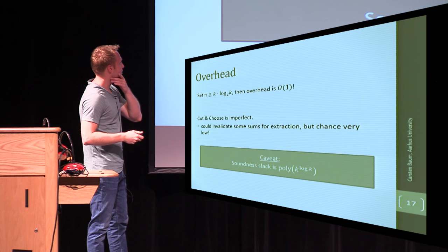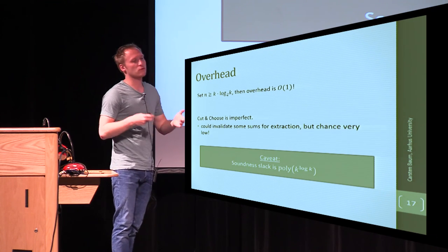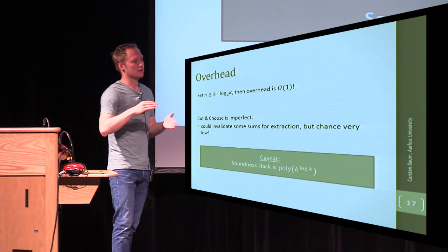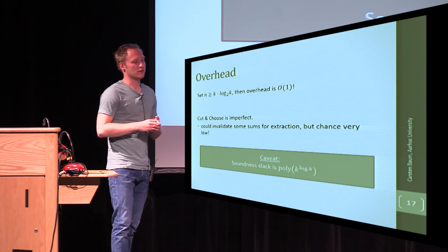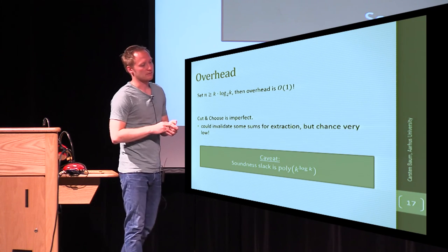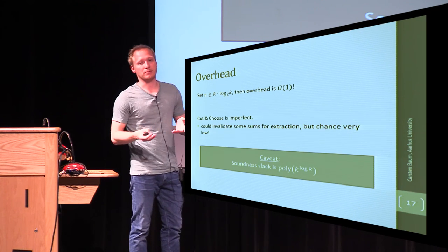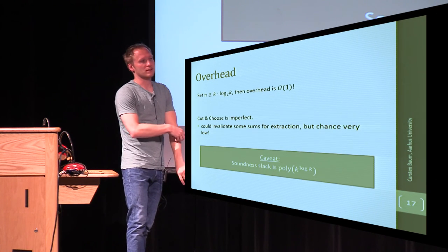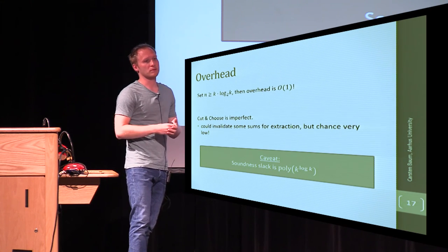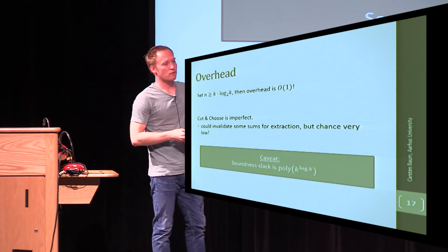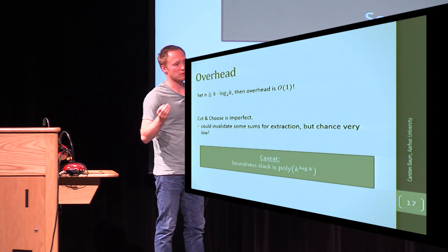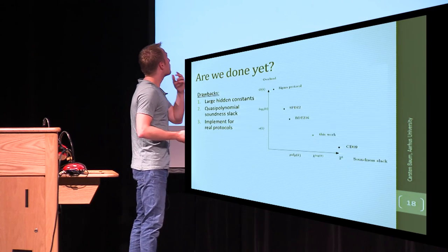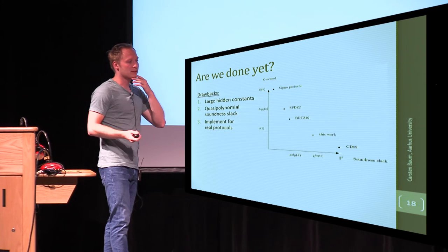A caveat is, if we actually try to prove a soundness bound, a bound on soundness slack, then, in our work at least, we were only able to achieve something that is slightly super-polynomial in the security parameter. But, I mean, you can always, let's say, go for, if you want to prove security parameter 40, you can just apply or prove twice for security parameter 20, and fine.